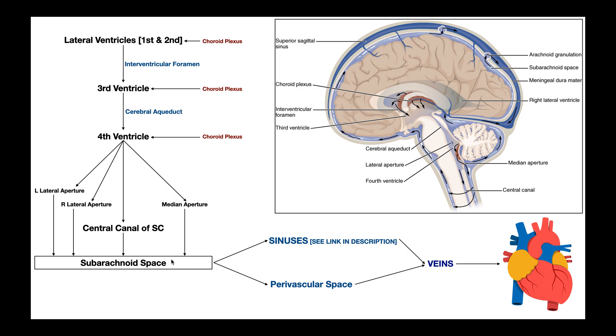In terms of meninges, the subarachnoid space is between the arachnoid mater and the pia mater. Cerebrospinal fluid circulates in the subarachnoid space, but it has to be cleared from the brain because the CSF is taking up waste products. One way the brain gets rid of cerebrospinal fluid is it enters into structures called sinuses. The one at the top is called the superior sagittal sinus.